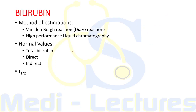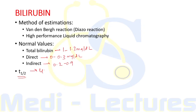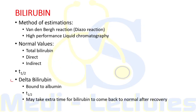Normal values: total bilirubin is 1 to 3 mg/dL, direct 0 to 0.3 mg/dL, and indirect 0.2 to 0.9 mg/dL. The half-life of serum bilirubin is 4 hours. Delta bilirubin is the fraction bound to albumin, so its half-life mirrors albumin's — 14 to 21 days — which is why bilirubin may take extra time to return to normal after recovery due to late clearance of delta bilirubin.